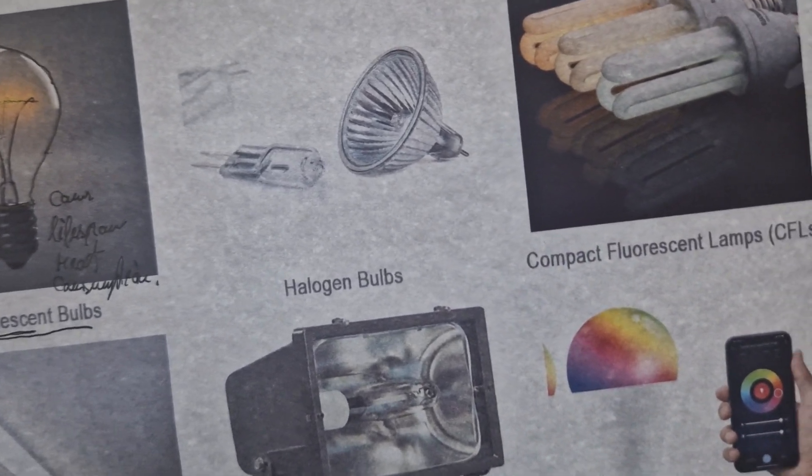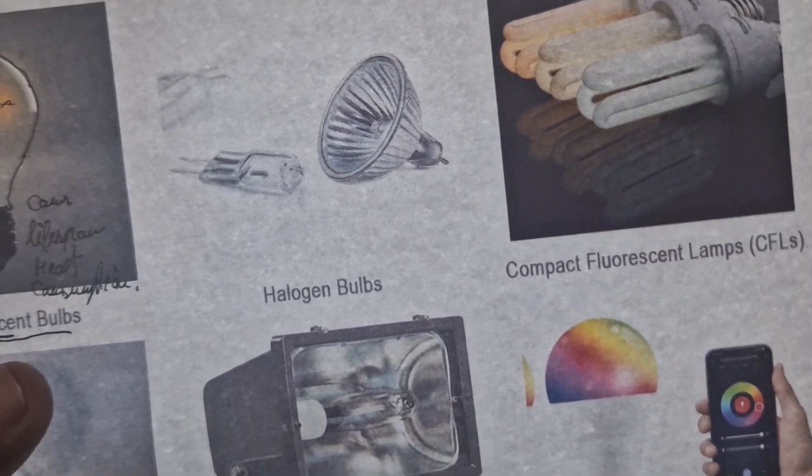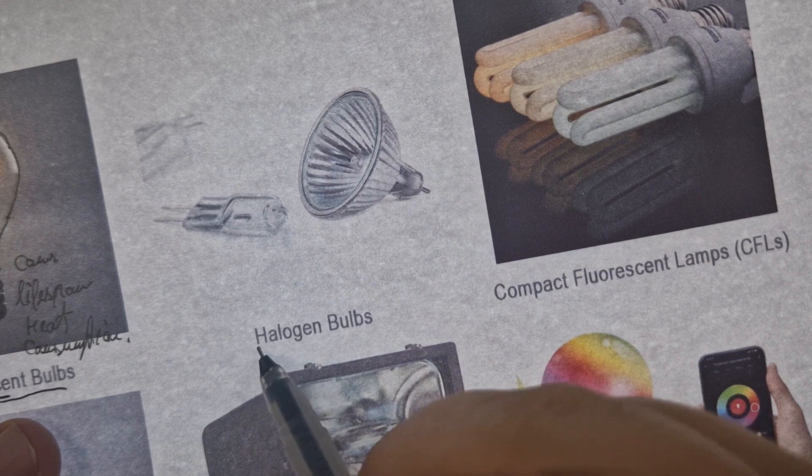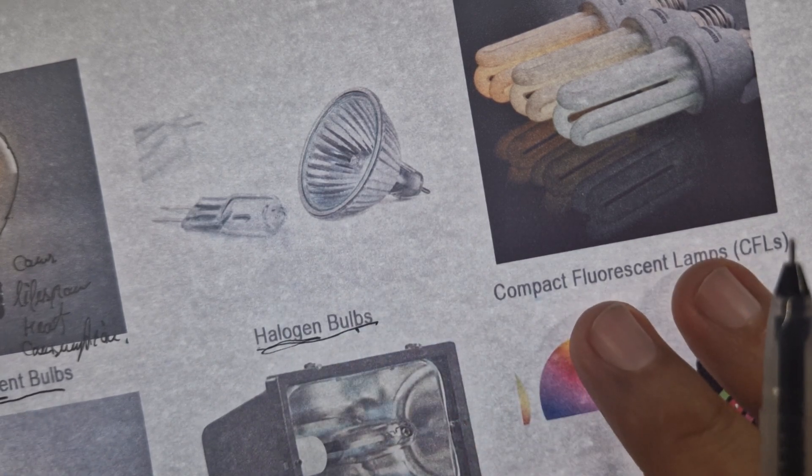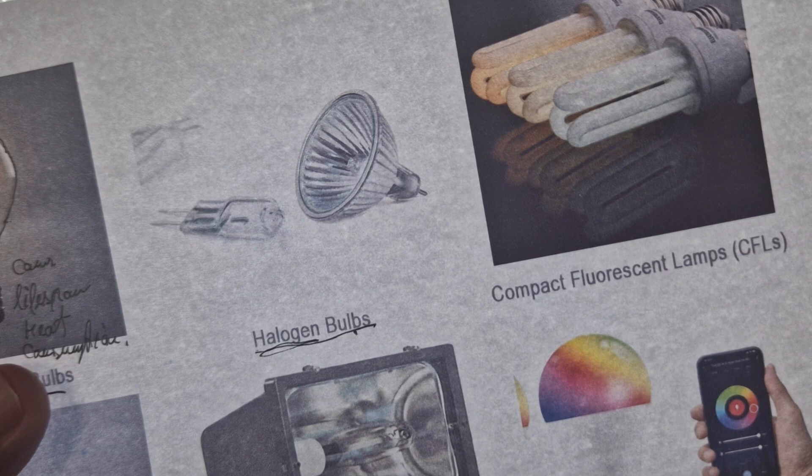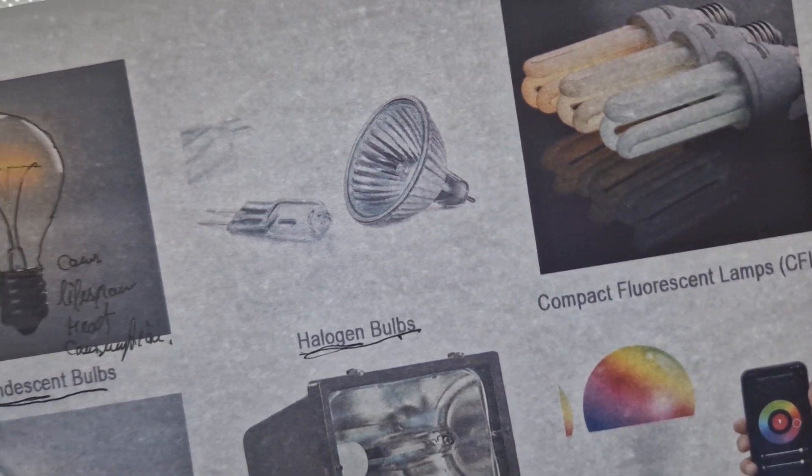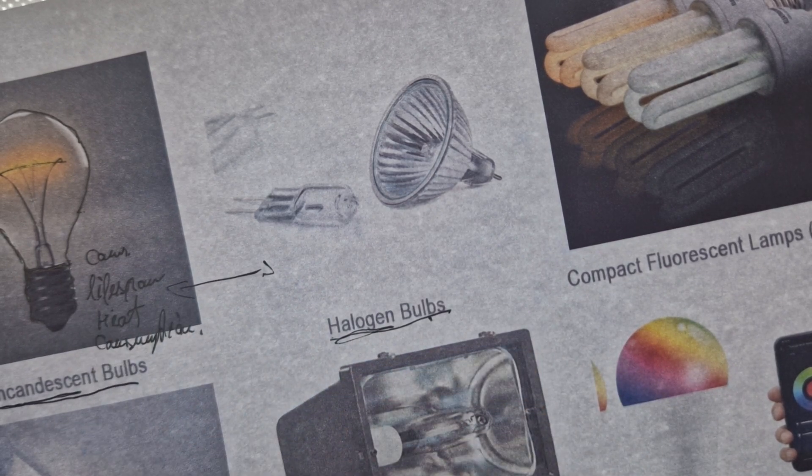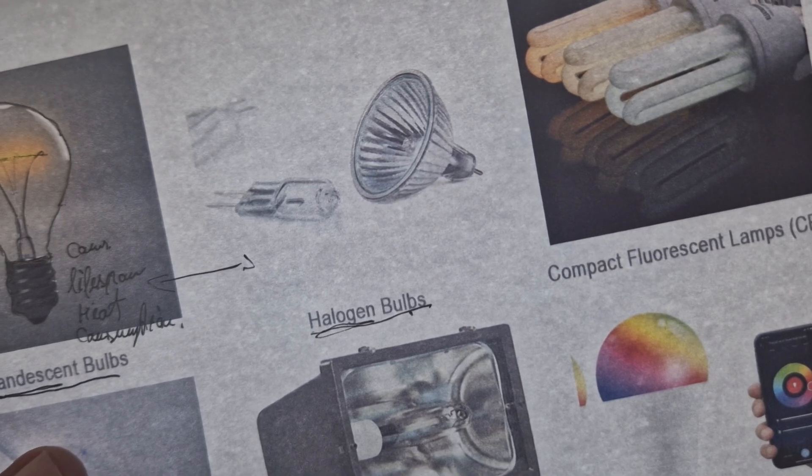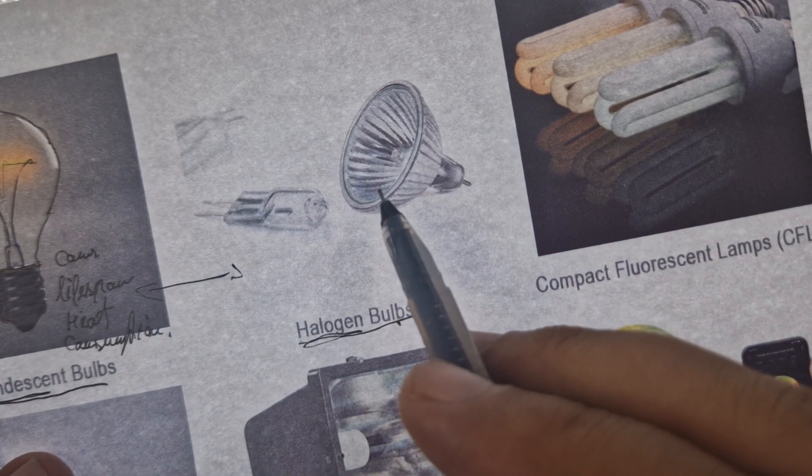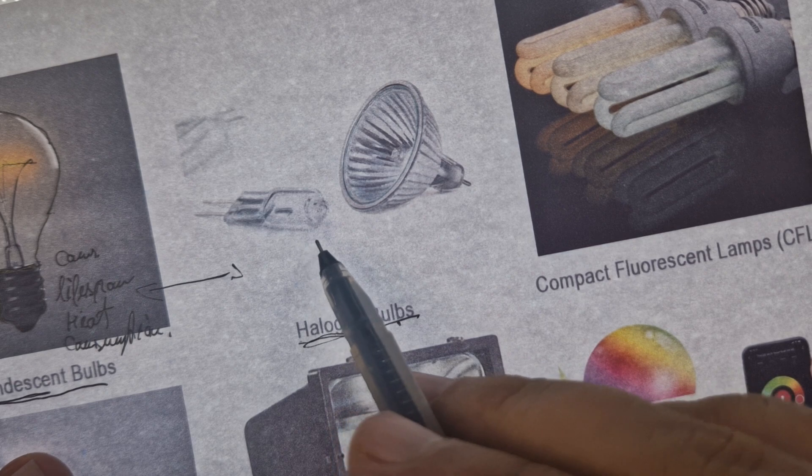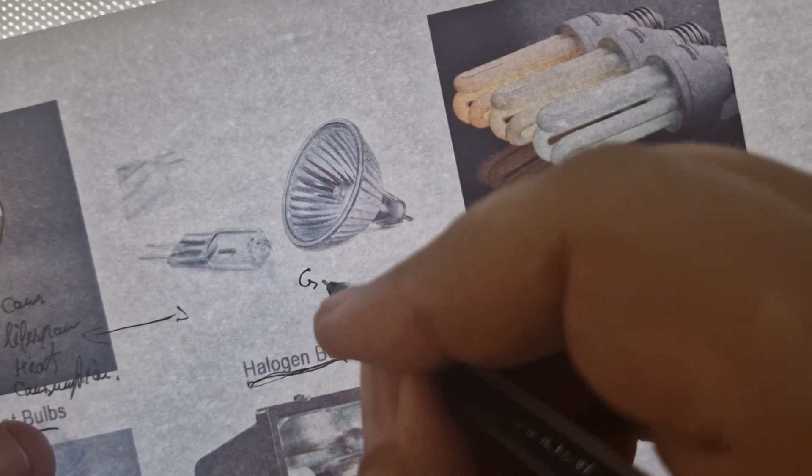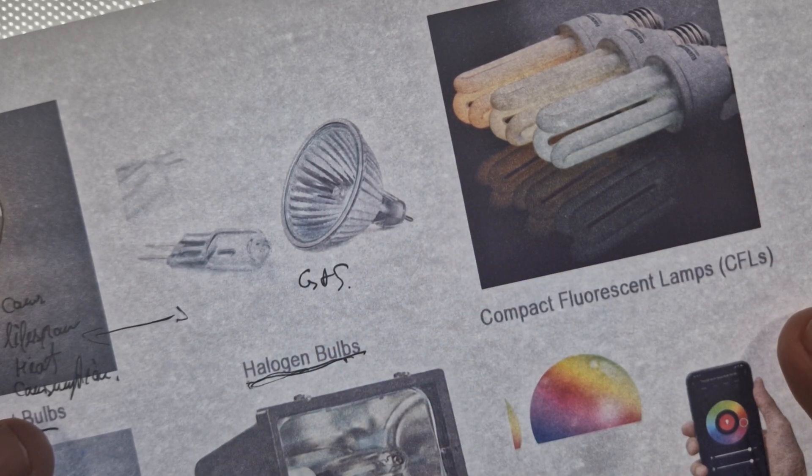Let's move to the next one. Here we have the halogen bulbs. Halogen bulbs are a type of incandescent bulb, so it's somewhat related to the incandescent bulb. But it has a gas inside the bulb here to increase the efficiency and life span. It has a gas.